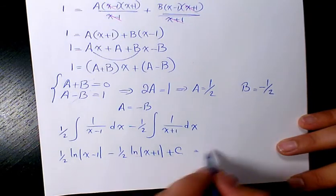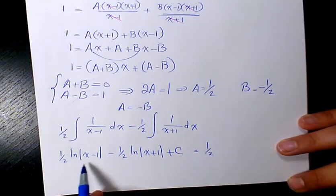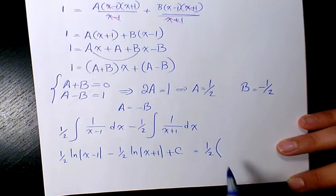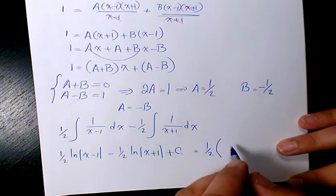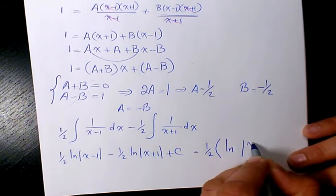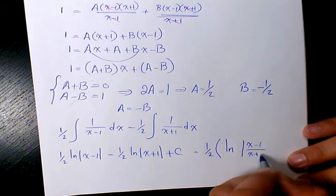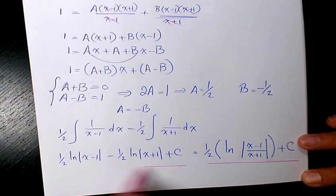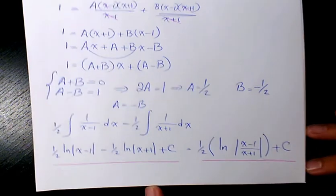So we factor 1 over 2. It's going to be ln x minus 1 minus ln x plus 1, which you can basically divide since you can say ln x minus 1 divided by x plus 1 plus C. You can write it either like this or this. This is going to be the final answer.